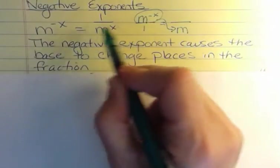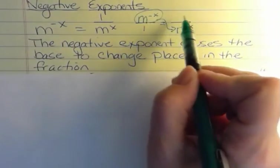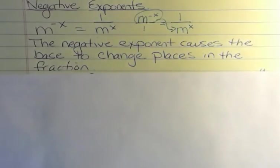Once it drops down, that power goes from negative to positive, and of course we have to put something on top, which is where the 1 comes in.